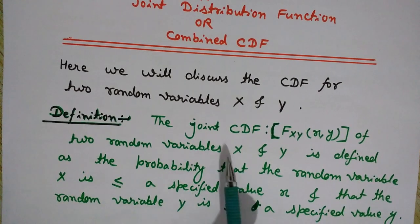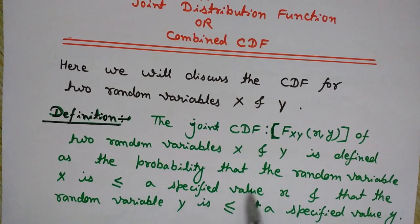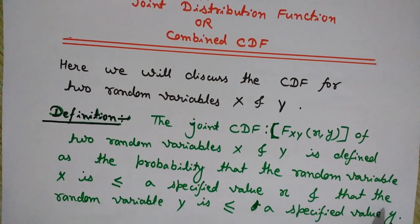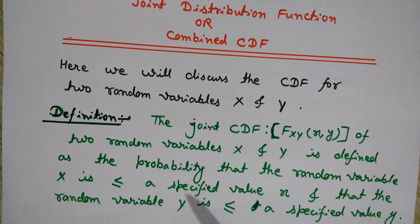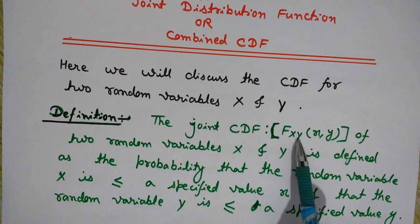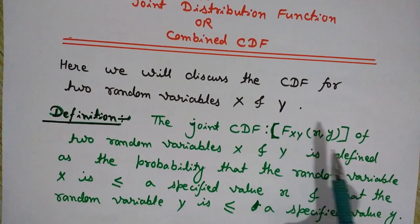The joint CDF F_XY of two random variables X and Y is defined as the probability that random variable X is less than or equal to a specified value x, and random variable Y is less than or equal to a specified value y. As seen in the single-variable CDF, the same condition applies — but here we use two random variables, making it a combined CDF.